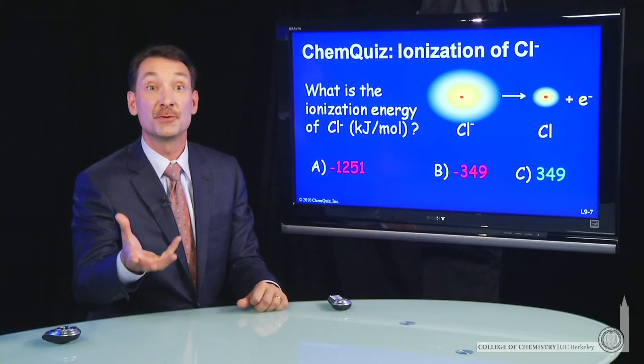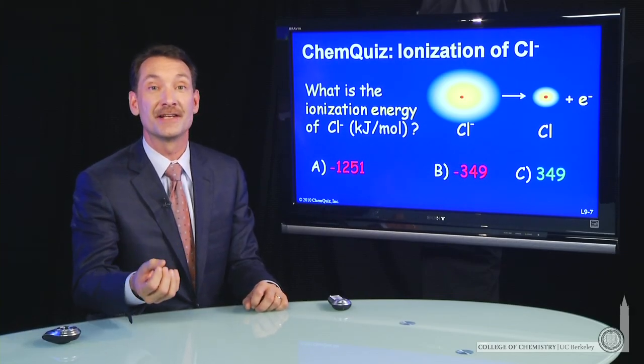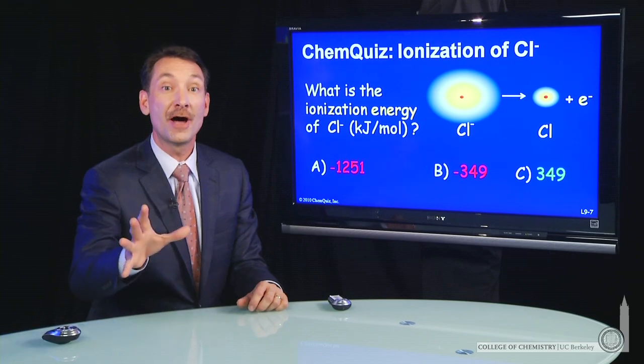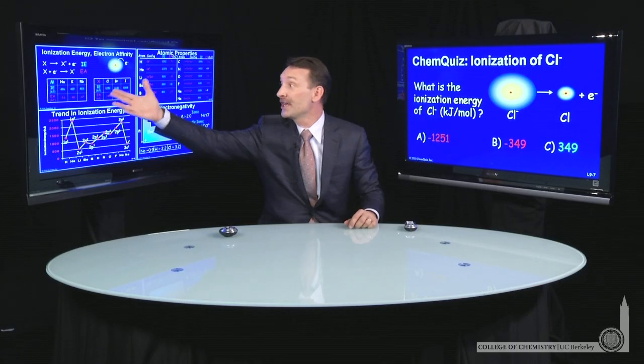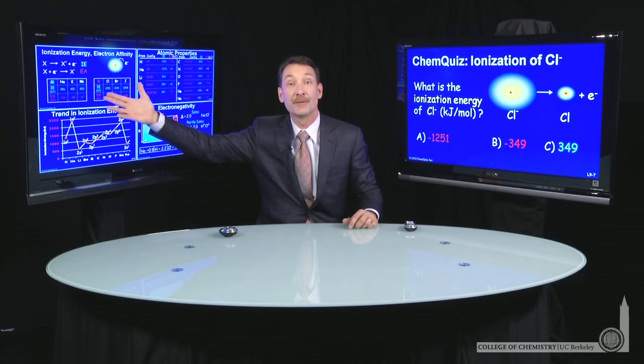Let's look at the ionization energy for a species we haven't talked about yet, the Cl minus ion. Now, we know about ionization energies from our tables and the trends of the periodic table.